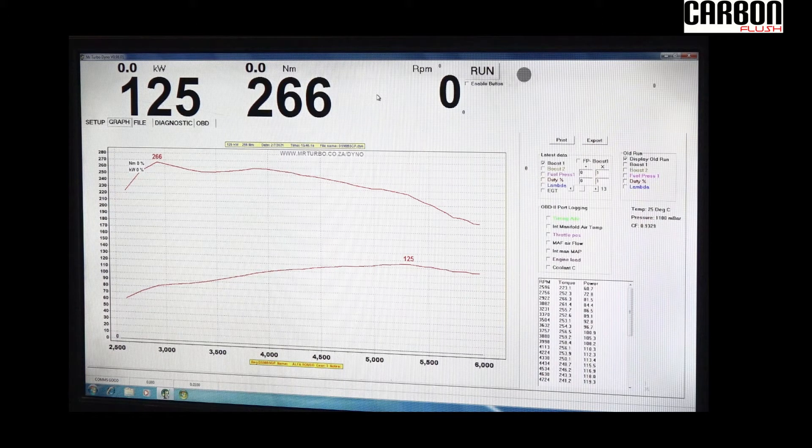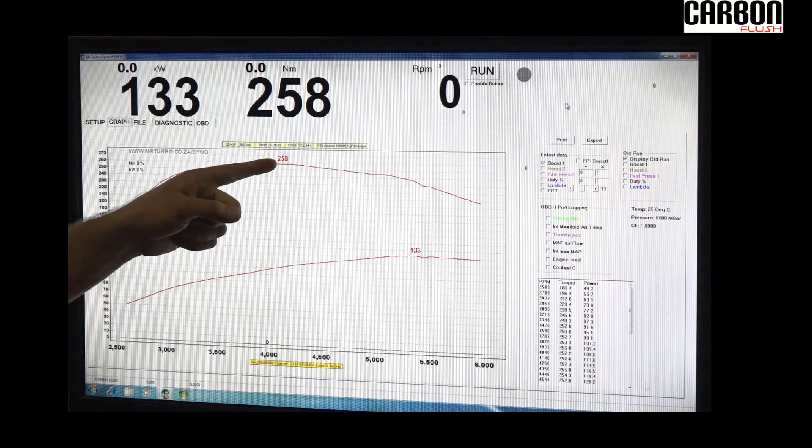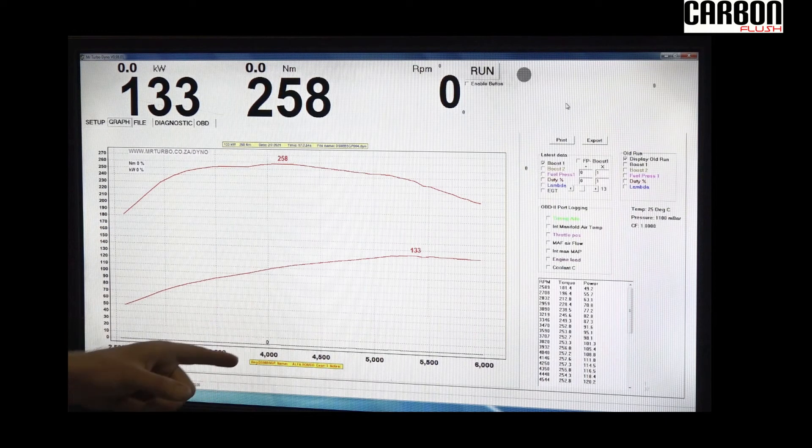We'll match it now with the final results after we've done the cleaning. This is the final dyno run after we did the carbon flush on the Alfa Romeo. You can see the peak kilowatt figures on the wheels is up to 133 wheel kilowatts.